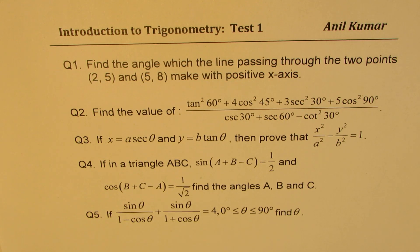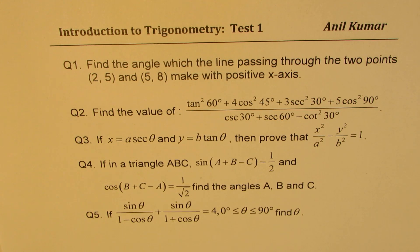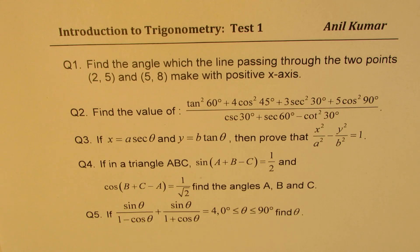Question number five: if sin theta over (1 − cos theta) plus sin theta over (1 + cos theta) equals 4, and theta is between 0 and 90 degrees, find theta. You can cross multiply and then solve this equation using Pythagorean trigonometric identities. It can be simplified to find the answer. I hope with those hints it should not be difficult for you to solve these five questions.